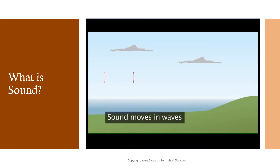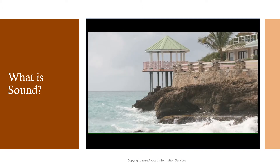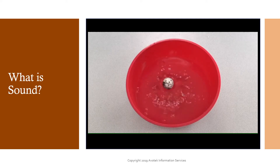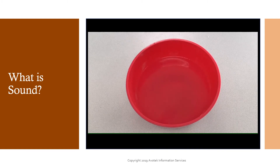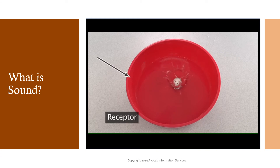Sound moves in the form of waves. Sound waves travel in much the same way that a wave travels through water. Because waves in water are easy to see, they make a good analogy for illustrating how sound behaves. Drop an object into a body of water — it causes a splash, and physical waves ripple out from that point. The dropped object is the source of the wave, the water is the medium carrying the waves, and the surrounding container is the receptor.